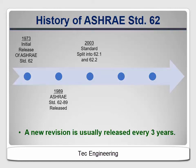Then they returned to the three-year release cycle. In 2007, they released a version that shifted away from the philosophy of 0.35 air changes or 15 CFM per person to a calculation method that combines the number of occupants and the floor area into a single equation to determine the required ventilation rate.